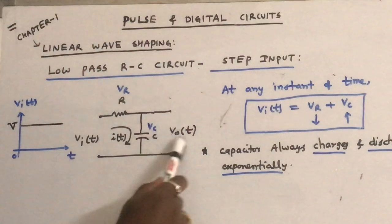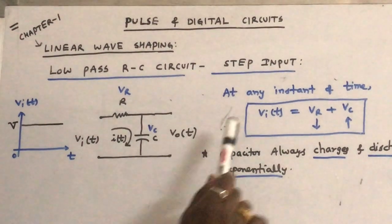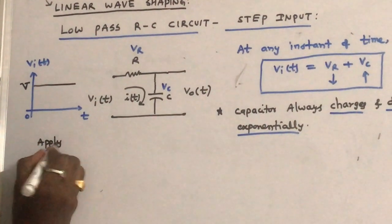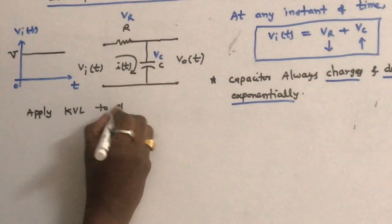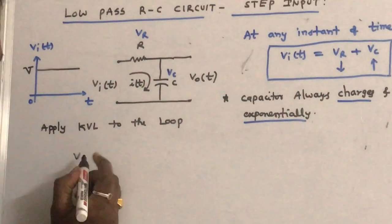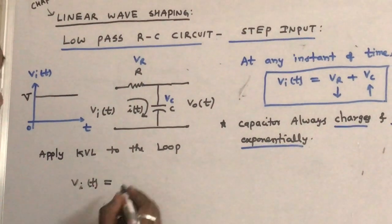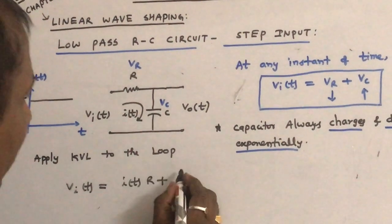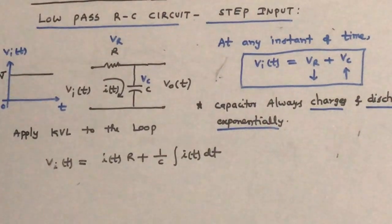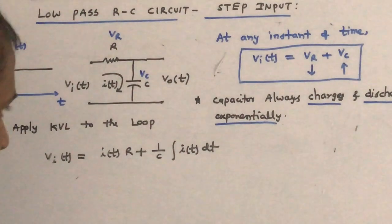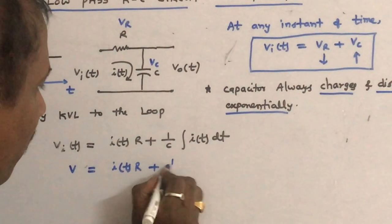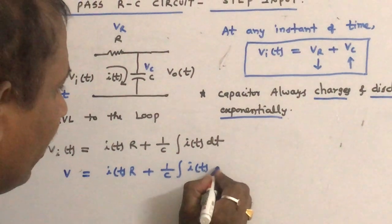We will derive the expression for V0(t) and the waveform of V0(t). Applying KVL — Kirchhoff's Voltage Law — to the loop: Vi(t) is written as i(t)·R plus (1/C)·∫i(t)dt. The input voltage is a constant voltage V, so: V = i(t)·R + (1/C)·∫i(t)dt.